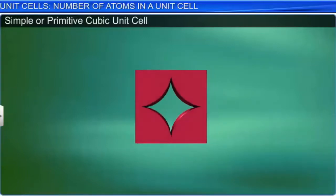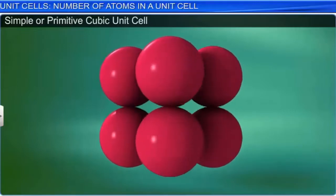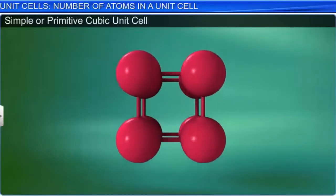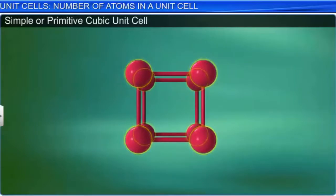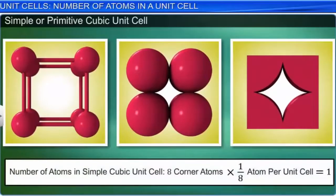There are eight atoms at the eight corners. Thus, the number of atoms in each unit cell is equal to eight corner atoms multiplied by one-eighth of an atom per unit cell, which equals one.